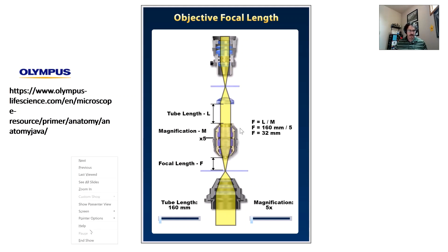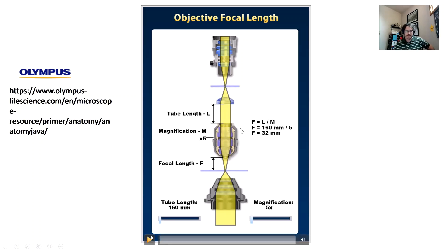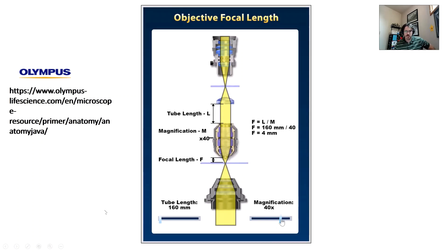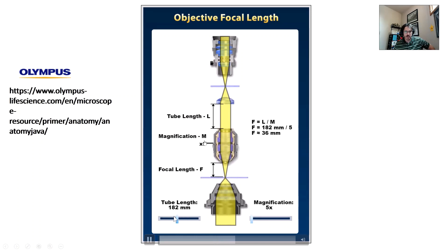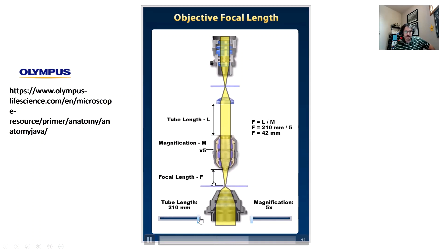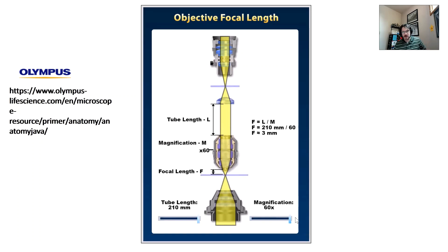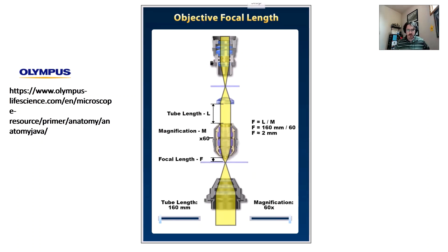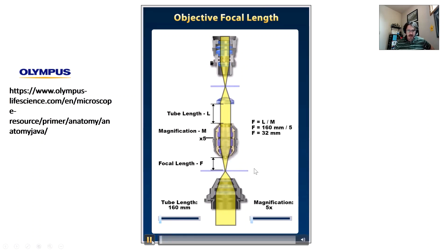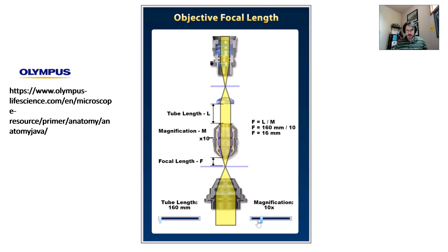Going back to the Olympus tutorial: you can increase the magnification and see the focal distance getting smaller - they use focal length and focal distance interchangeably. The length of your objective also plays a role in your focal point. This is a very good tutorial because it shows the bigger picture of an optical microscope. Higher magnification means lower focal length or focal distance.